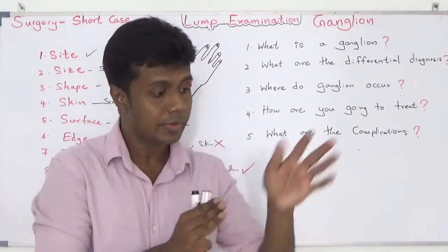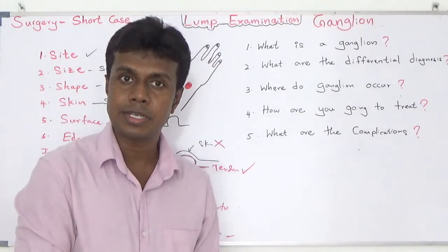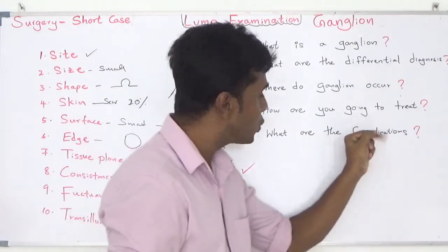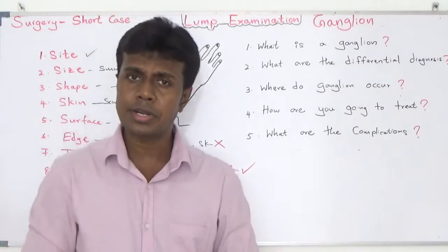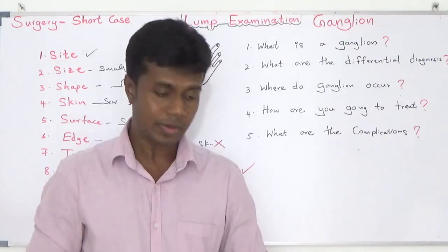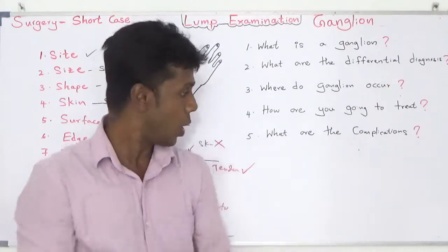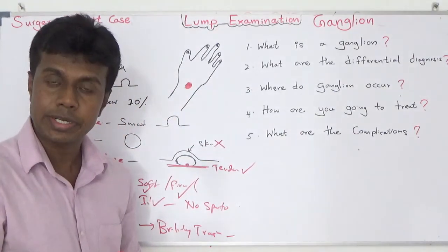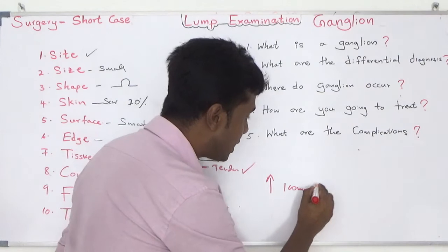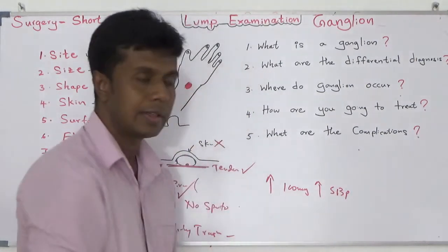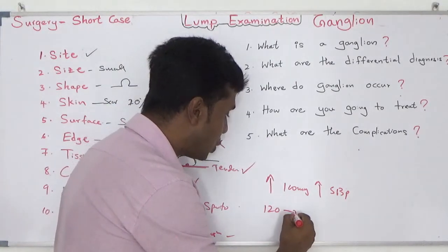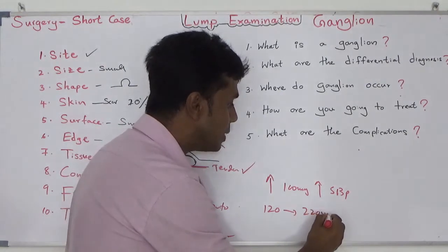The most common sites for ganglion are the dorsum of the hand, the ventral aspect of the hand, and the ankle. How are you going to perform excision? Under general anesthesia with a bloodless field using a tourniquet. The pneumatic tourniquet pressure should be inflated to roughly 100 mmHg above systolic blood pressure. For example, if the patient's blood pressure is 120, inflate the cuff to 220 mmHg.